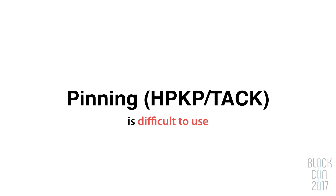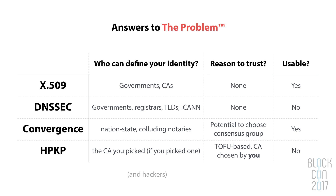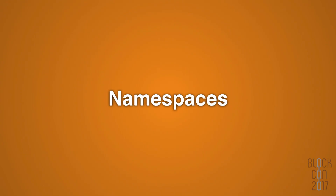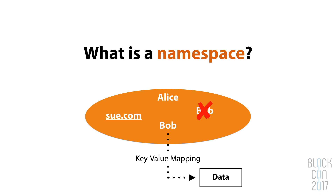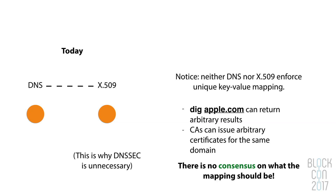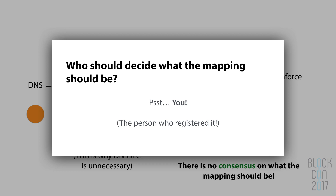Pinning is simple but difficult to use and ineffective for various reasons. Of the various mechanisms, HPKP is the most secure but not easy to use. Now, what are namespaces? They are a space with names in them — no duplicate names allowed, so it's effectively a key-value mapping. In order to fix internet security, you have to have a namespace. The problem with today's system is that we've got two separate namespaces that aren't really linked well together, and there's no consensus about what they are.